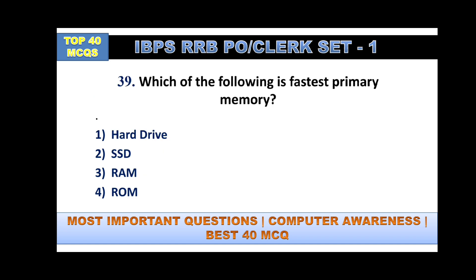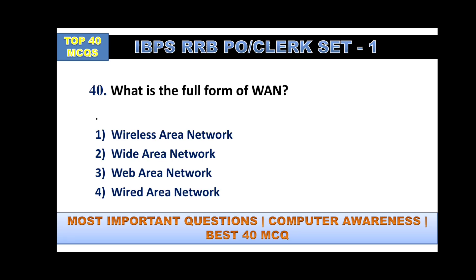Which of the following is the first and primary memory? The answer is RAM — Random Access Memory. ROM means Read Only Memory and SSD means Solid State Drive.